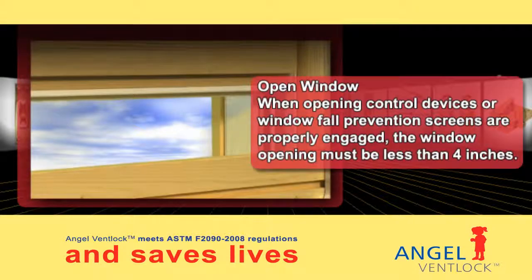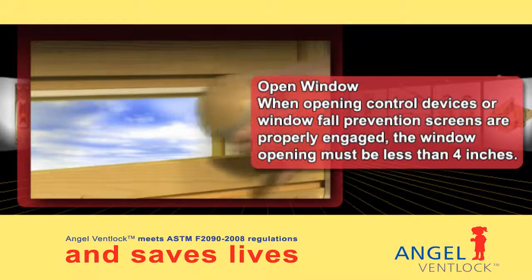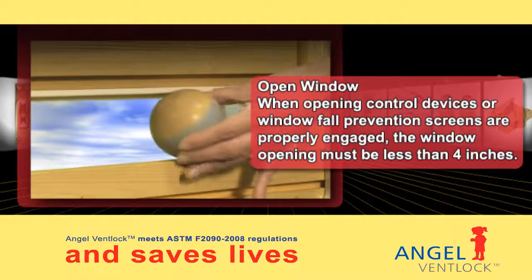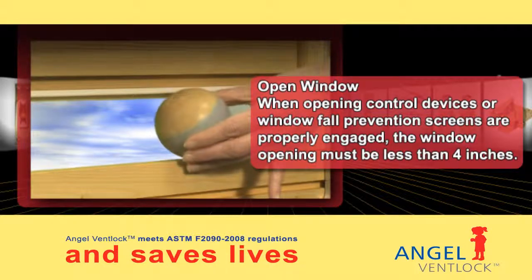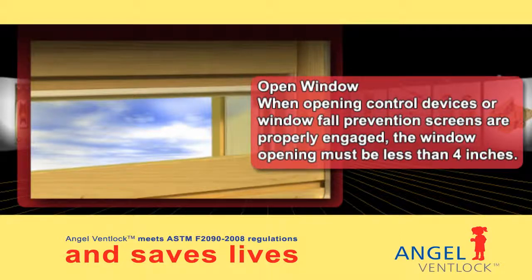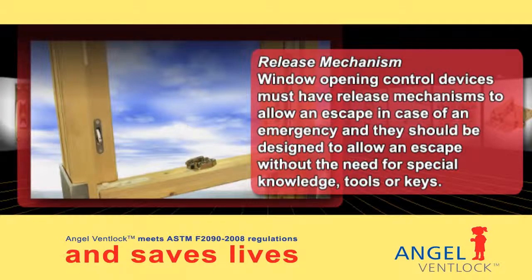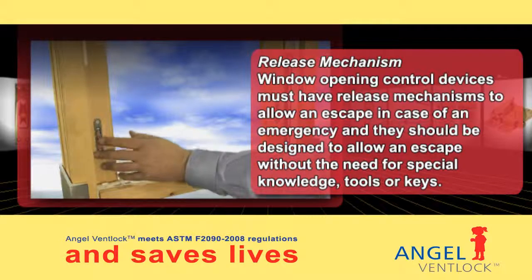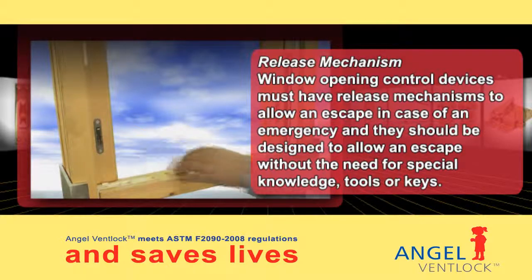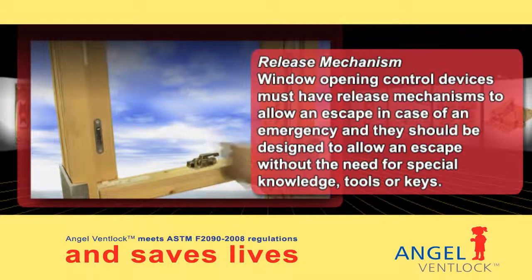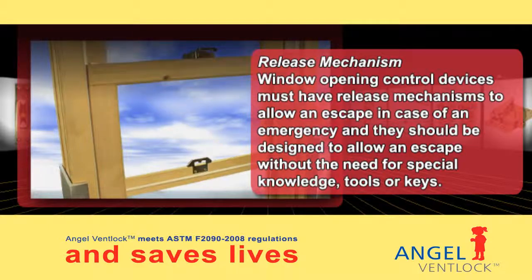When opening control devices or window fall prevention screens are properly engaged, the window opening must be less than four inches. Window opening control devices must have release mechanisms to allow an escape in case of an emergency, and they should be designed to allow an escape without the need for special knowledge, tools or keys.